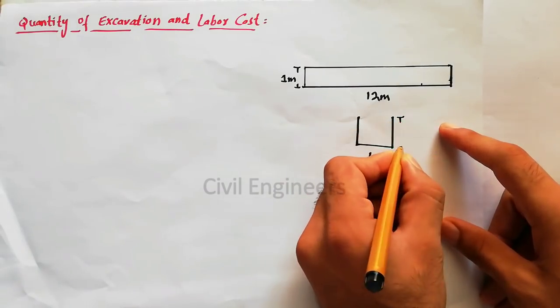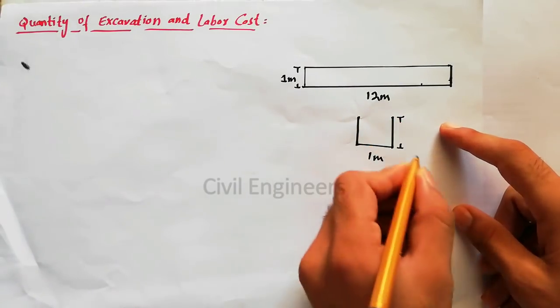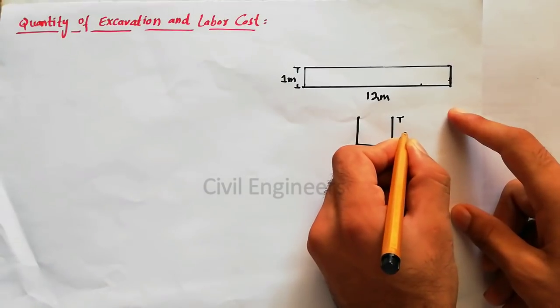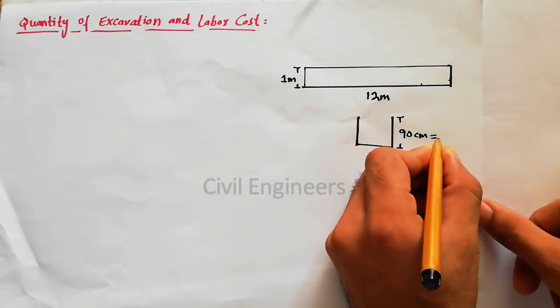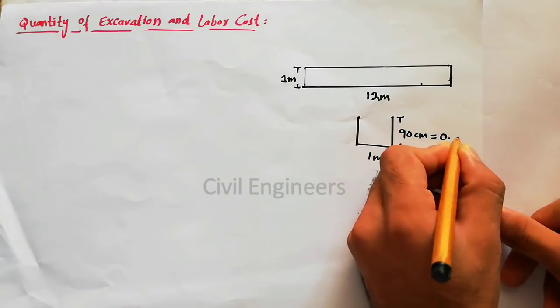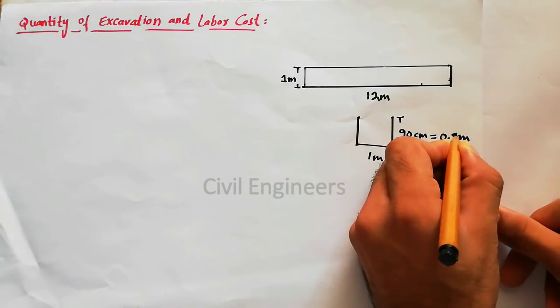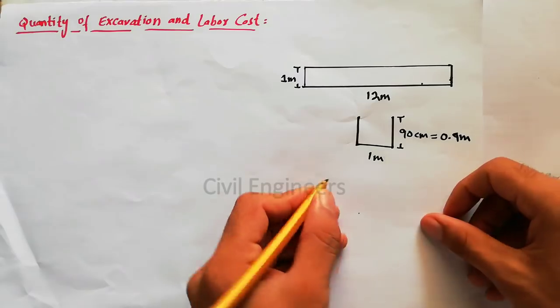This is 1 meter and the depth of the foundation or our excavation is 90 centimeters, which equals 0.9 meters. Right.